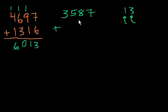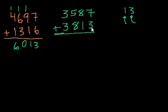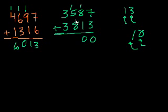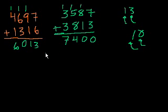Let's do another one: 3,587 plus 3,813. 7 plus 3 is 10 — you can't put a 10 here, it's 0 ones and 1 ten. 1 plus 8 plus 1 — well, that's 10 again. But since we're in the tens place, that's 10 tens, which equals 100 and 0 tens. Then 1 plus 5 plus 8 — that's 14. But it's 14 hundreds, which is the same as 400 and 1,000. And then 1 plus 3 plus 3 is 7, and we're in the thousands place so it's 7,000. The answer is 7,400.